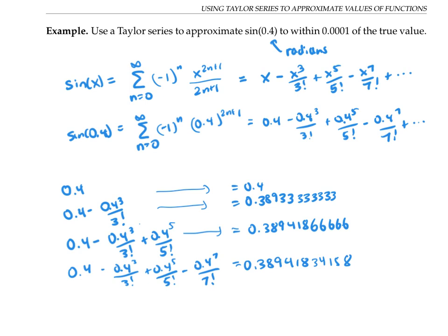Notice how the decimals are barely changing, even after just adding up two terms. I can be fairly confident that the value of sine of 0.4 up to six decimal places is going to be 0.389418, and in fact, the value that my calculator gives me is just that.